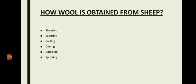To summarize: the sheep's hair is sheared off from the body, then scoured — that is, washed — then sorted according to characteristics, then dyed with colors, then combed and spun to obtain woolen yarn for making woolen cloth. The quality of the woolen cloth depends on the breed of sheep from which the wool is obtained.